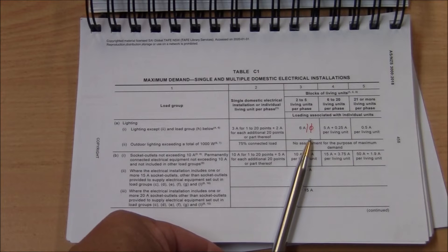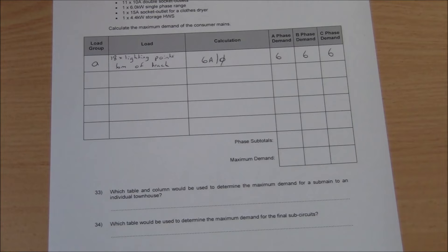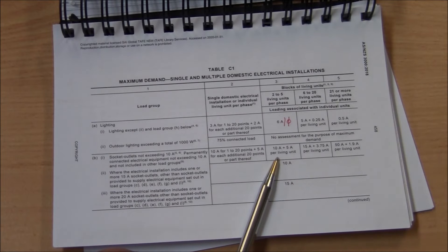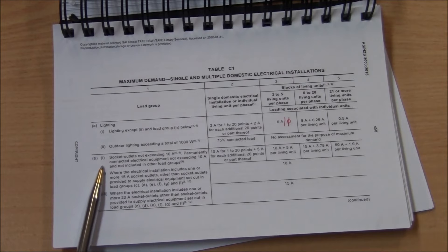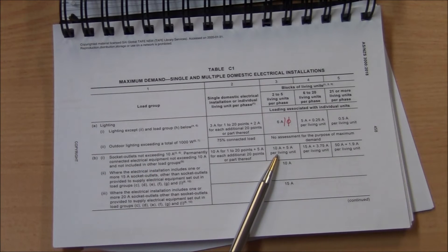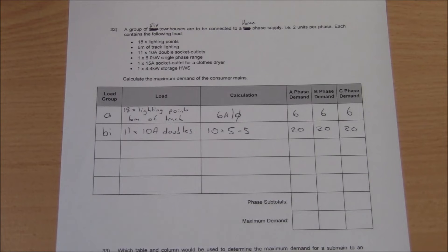Next is 10 amp socket outlets. Each unit has 11 double 10 amp outlets. Once again, column 3 of load group B, socket outlets not exceeding 10 amps, indicates a 10 amp initial contribution plus 5 amps per living unit per phase. In this example with two units per phase, we would be adding 20 amps per phase.